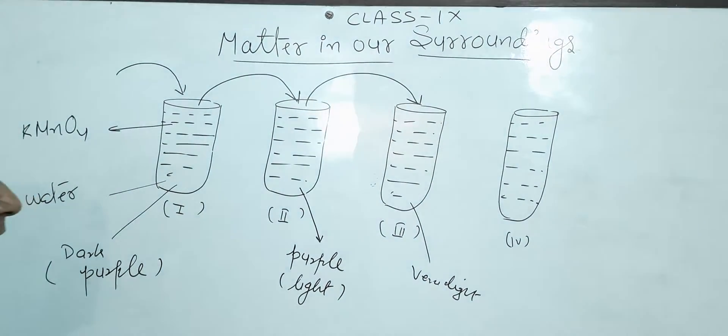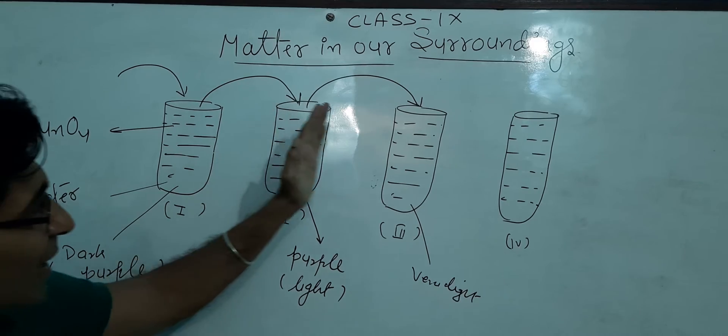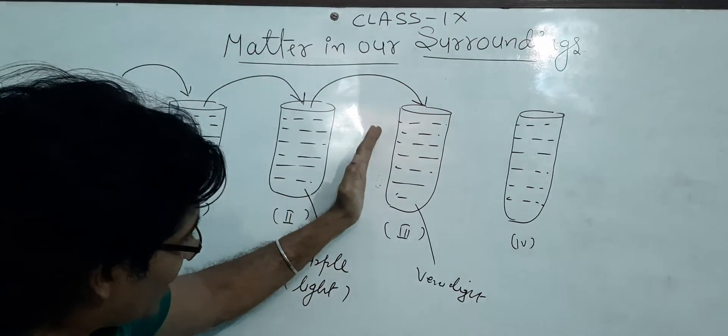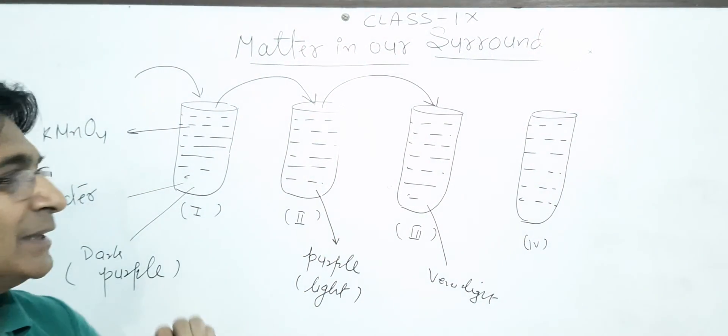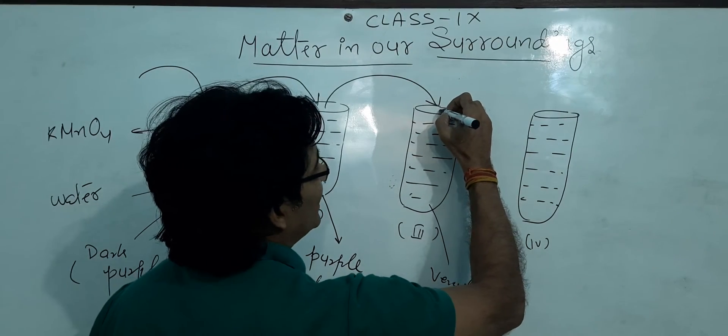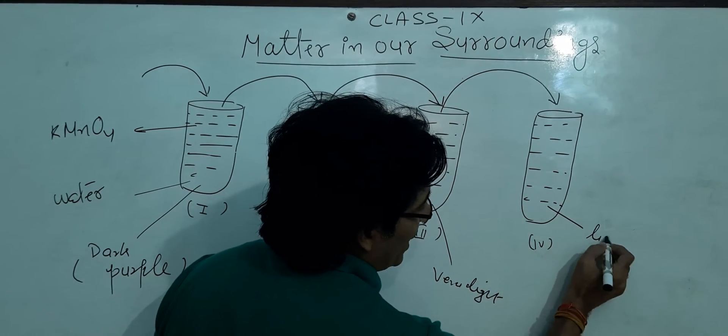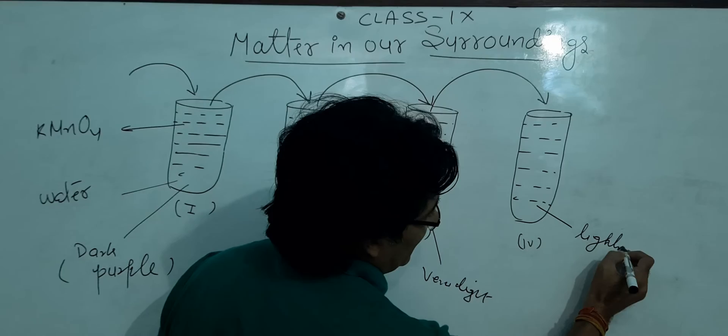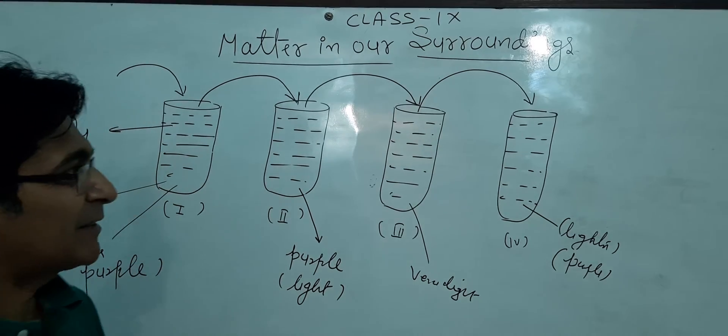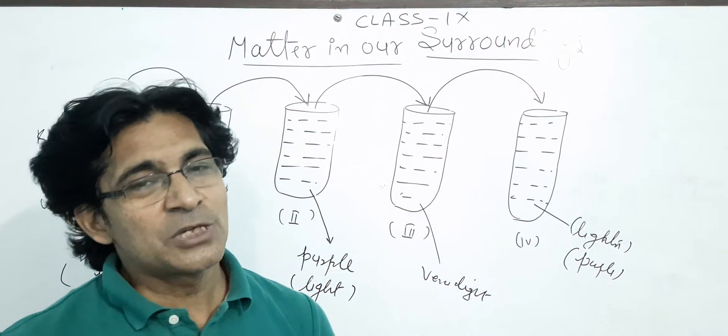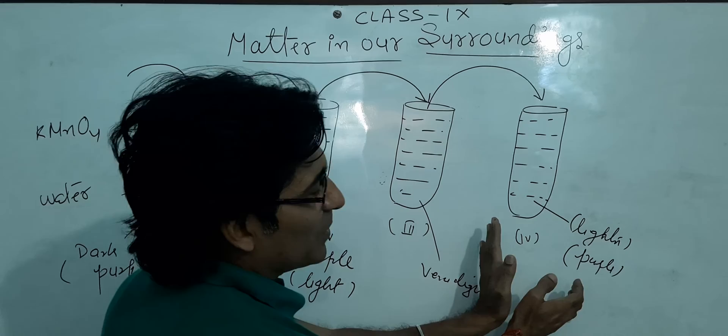This shows that the atoms which were present in test tube one, they reach to test tube number two and again reach to test tube number three. Because here also you can watch a slightly light purple color over here. If you pour this water into test tube number four, it also becomes lighter purple in color.